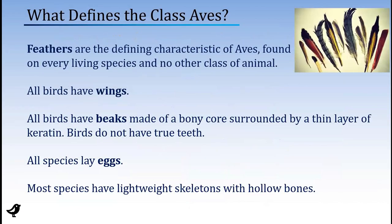So some fundamentals about birds. What makes a bird a bird? Well, the number one thing is feathers. It's a defining characteristic of the vertebrate class Aves. Feathers are found in every species of bird — every living species — and no other vertebrate has feathers. All birds have wings; obviously all birds don't fly. All birds have beaks made of a bony core and a thin layer of keratin. They do not have true teeth, although sometimes the bills of some birds have notches that function somewhat as teeth do. And finally, all species lay eggs.